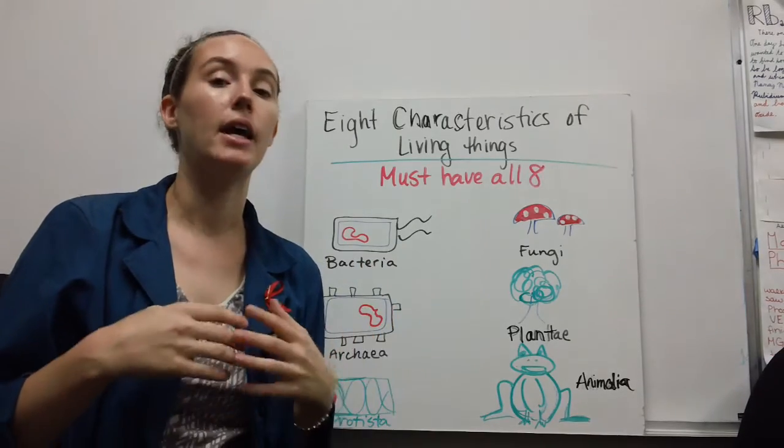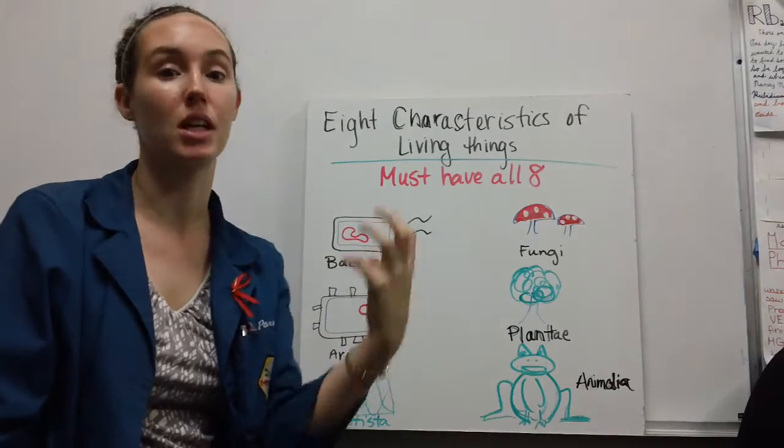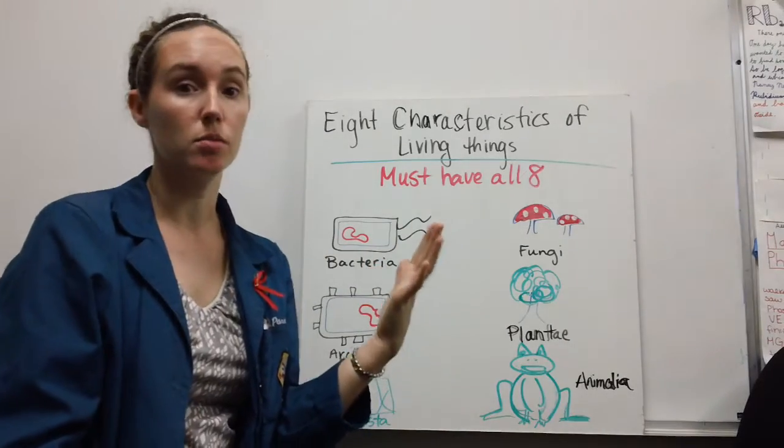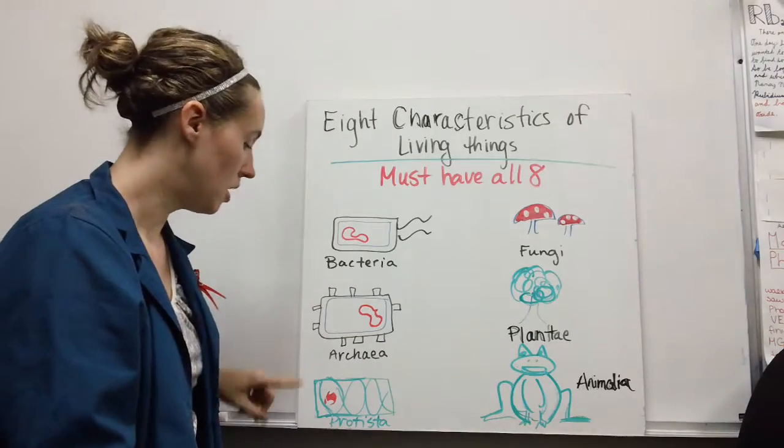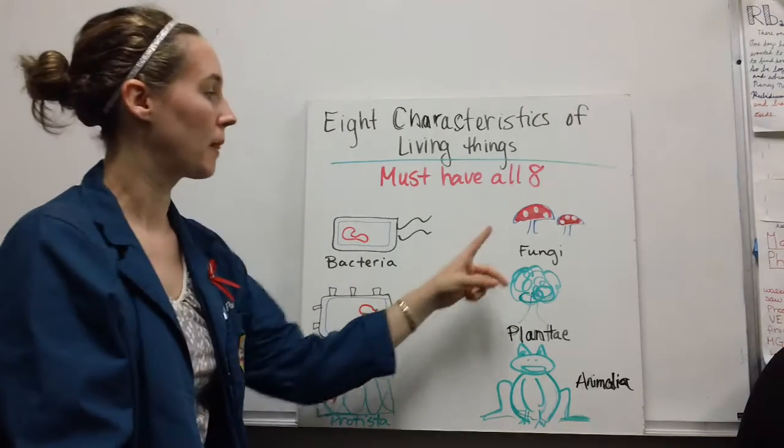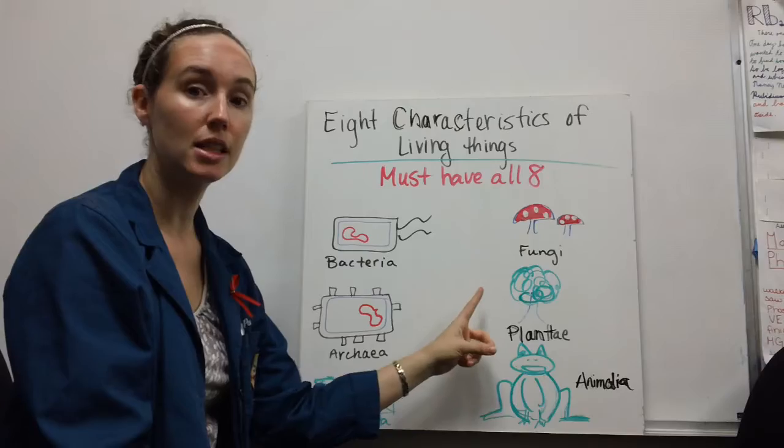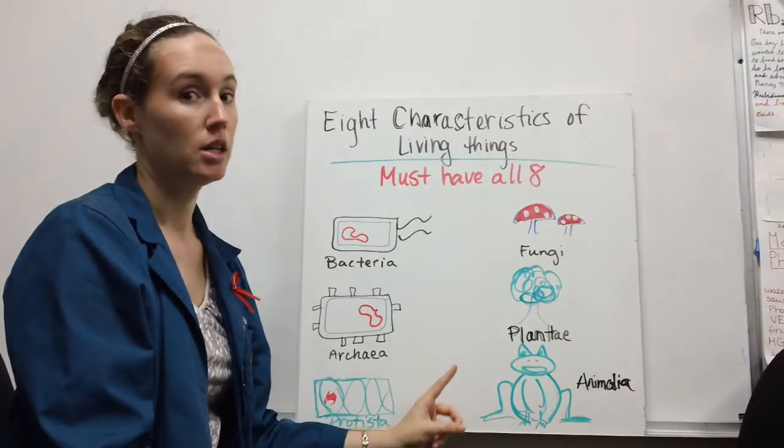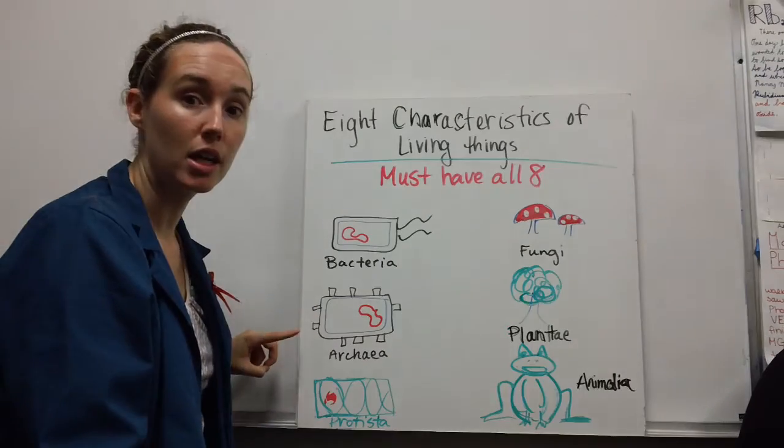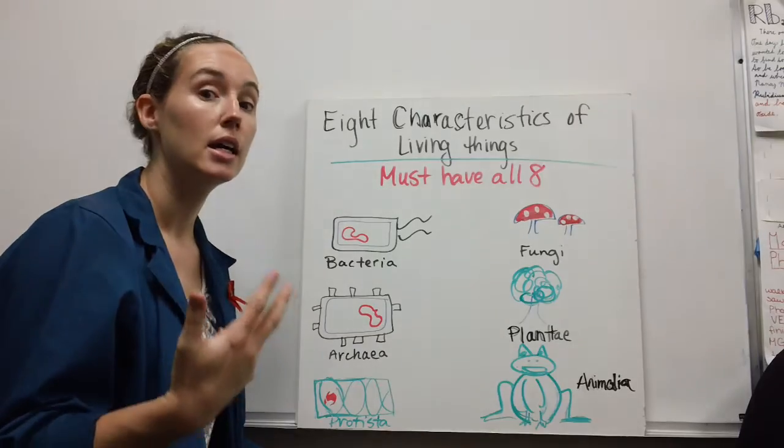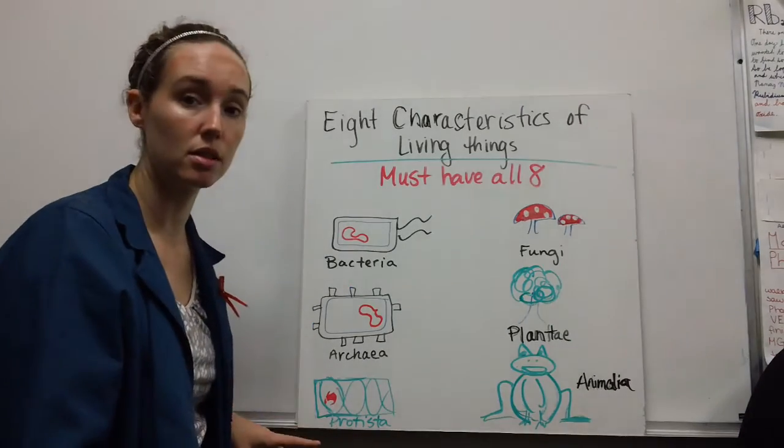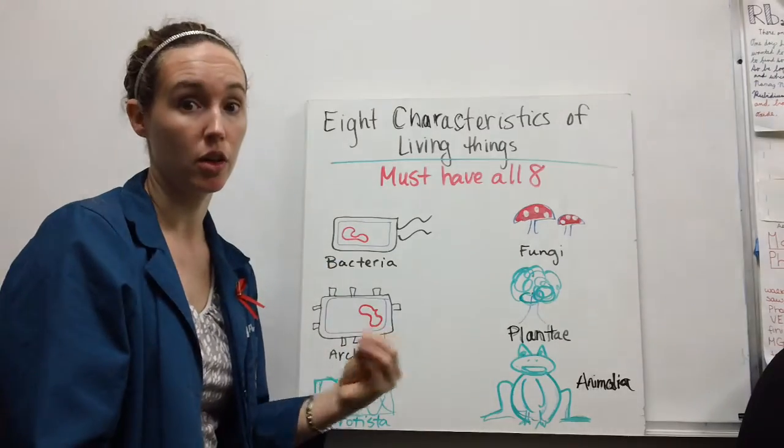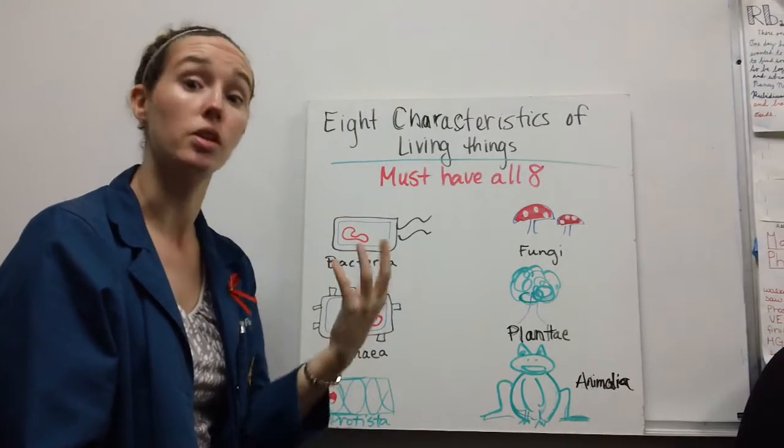Living things can be classified into six different kingdoms: bacteria, archaea, protista, fungi, plantae, and animalia. Bacteria and archaea are prokaryotic kingdoms with unicellular organisms. Protists are unicellular eukaryotic organisms, so they do have a nucleus.